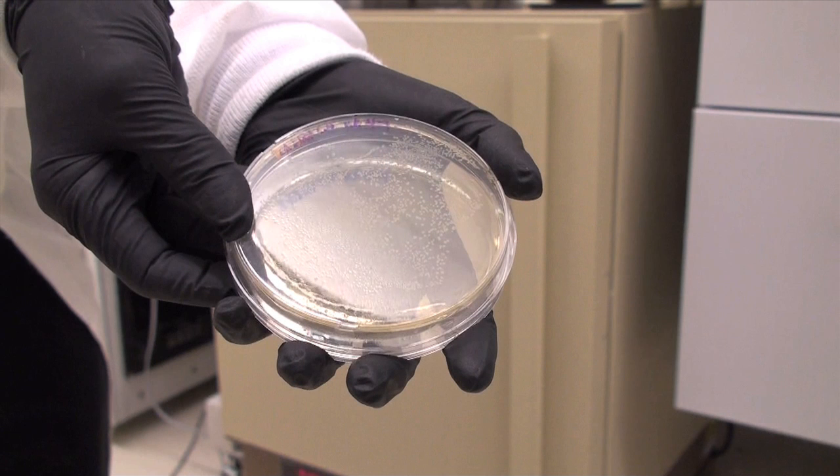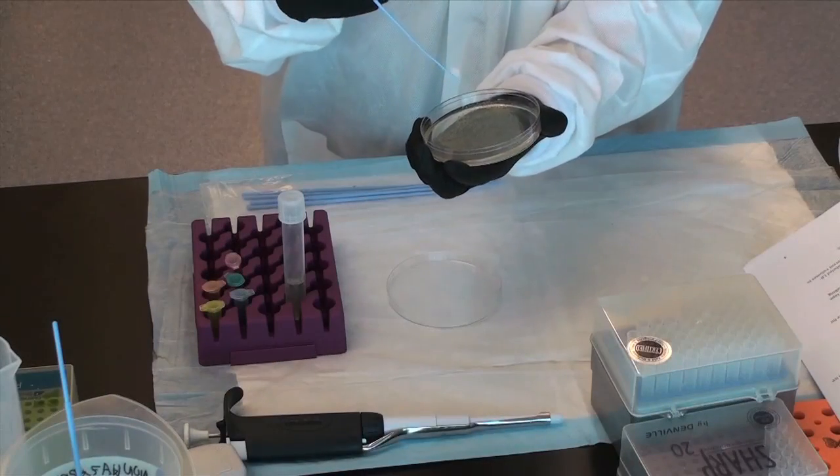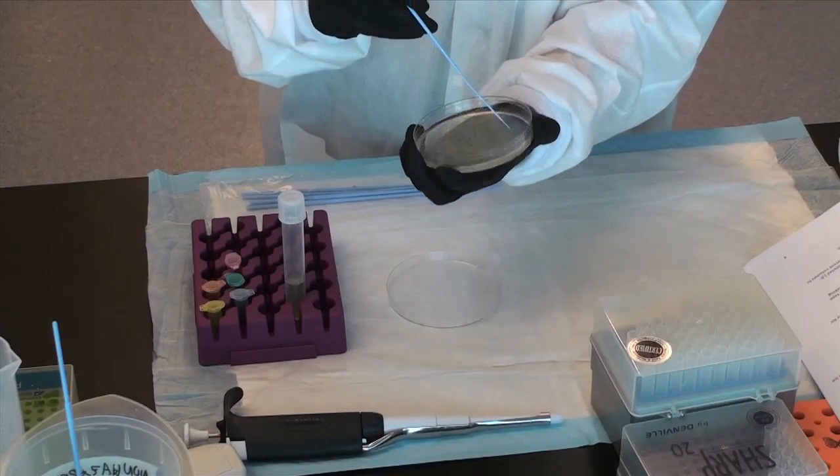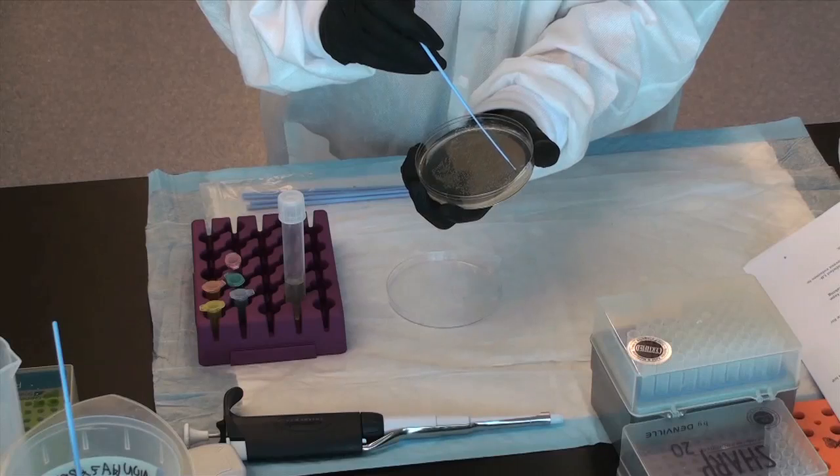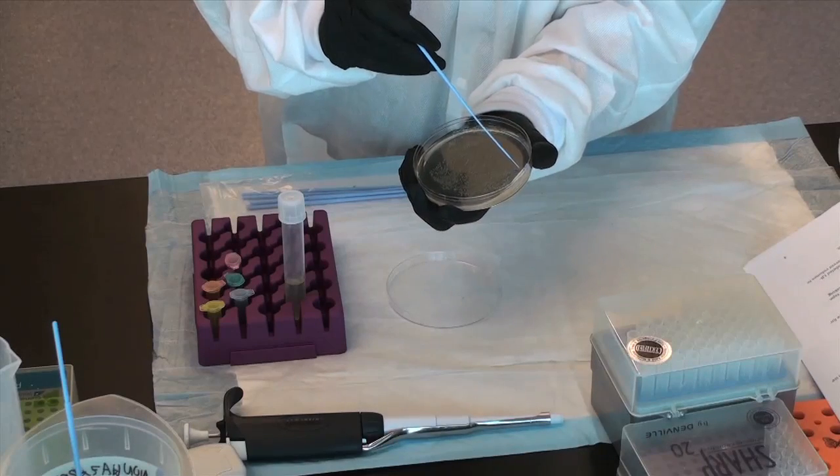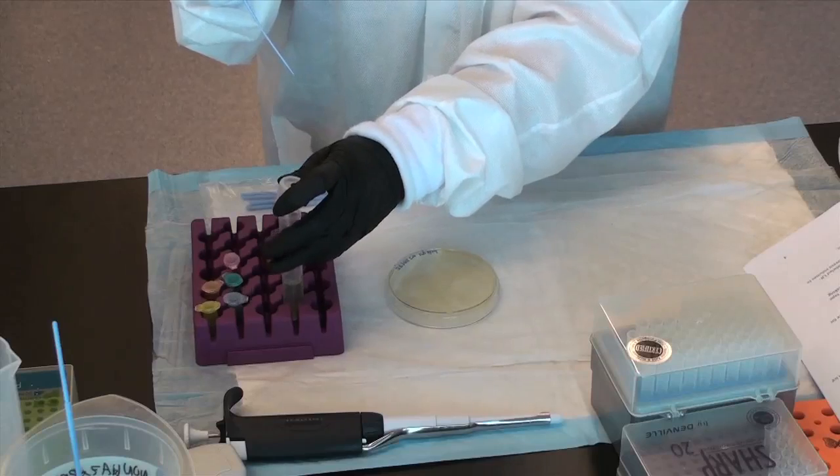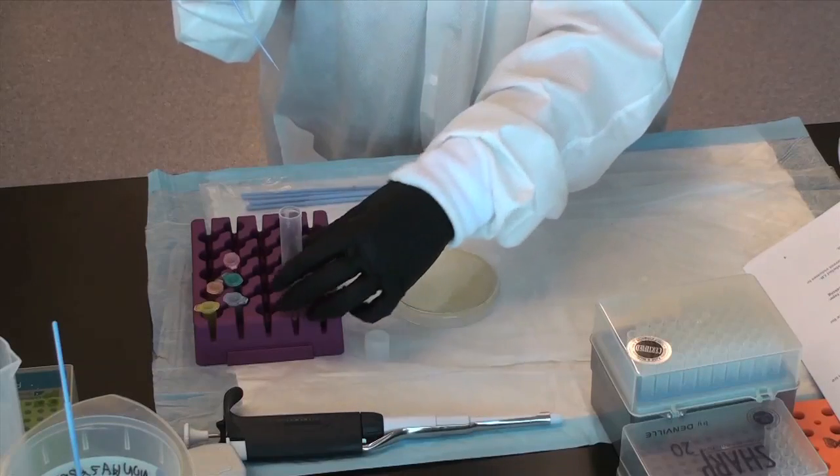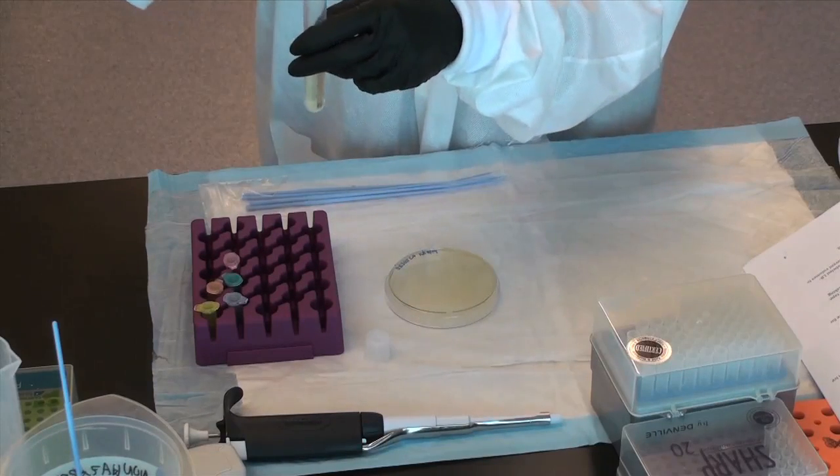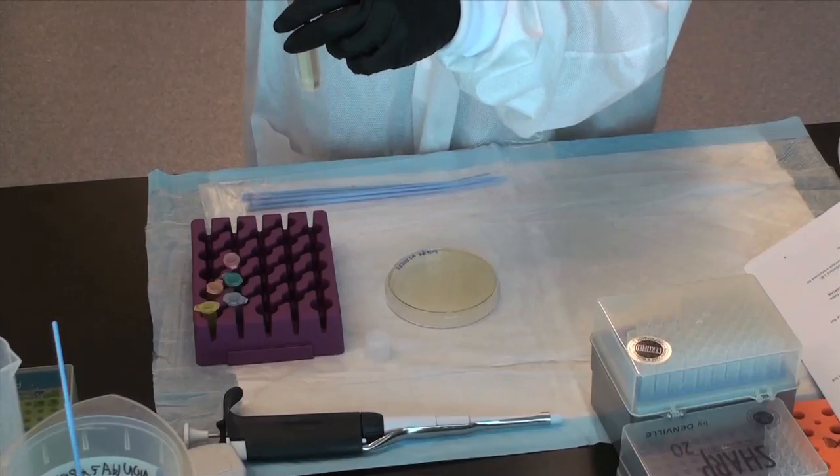Step 16: Observe transformed bacterial growth on selective LB plus ampicillin plates. Step 17: Using a sterile inoculating loop, pick one transformed colony and inoculate 5 milliliters of LB ampicillin broth and place it in the incubator as a starter culture. Incubate for approximately 8 hours at 37 degrees Celsius with vigorous shaking.